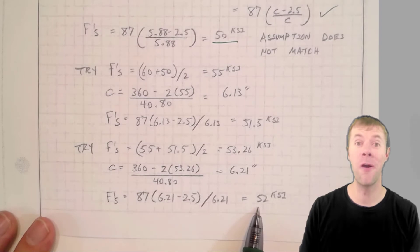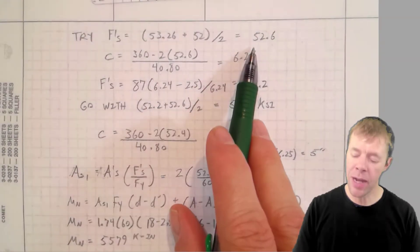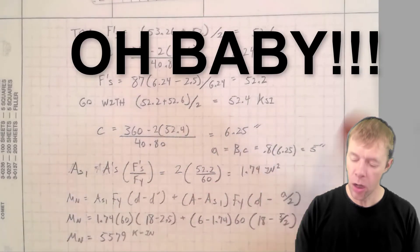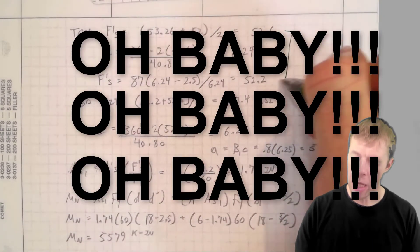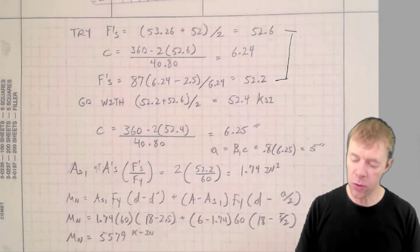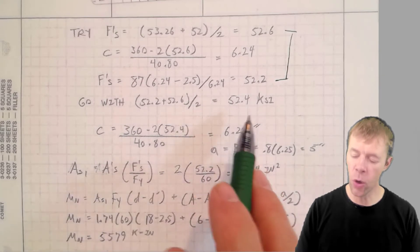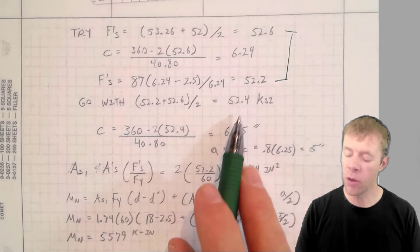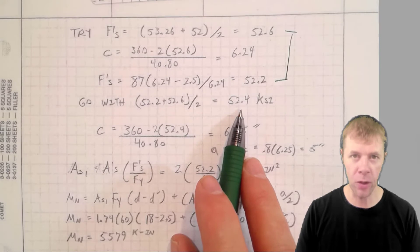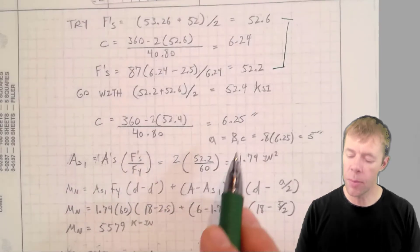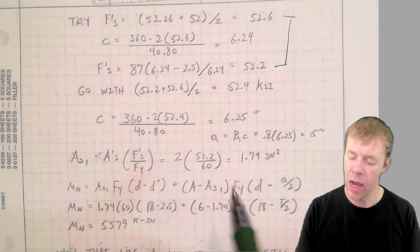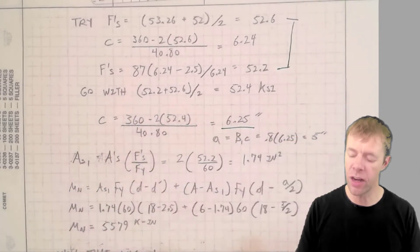On to the next page. We got another F prime S. We got another C. We got it. Really, really, really close. So we're going to go with the average of these two. We're going to go with 52.4 because it's halfway in the middle. It's within half a KSI, so I'm super happy. So I'm going to guess 52.4 KSI. We're going to get our C of 6.25 inches.